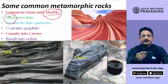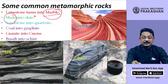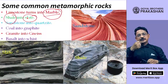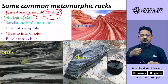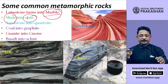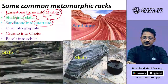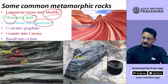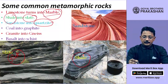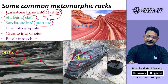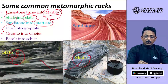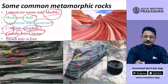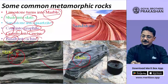Shale and mudstone get converted into slate. Slate is the actual slate on which during olden days people used to write. Sandstone gets converted into quartzite. Shale gets converted into slate. Coal gets converted into graphite. Granite gets converted into gneiss. Basalt rock gets converted into schist.